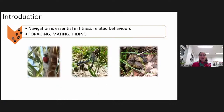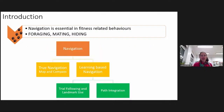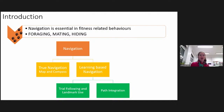Navigation is essential in multiple fitness-related behaviors such as foraging, mating, or hiding. Navigation can be split between true navigation, where individuals will use maps and compass, or learning-based navigation, where individuals can either follow a trail or use landmarks. On the other hand, they also can path-integrate to perform efficient navigation.